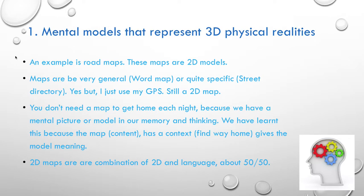Mental models that represent 3D physical realities — an example is a road map. These maps are 2D models; they only have two dimensions, they're flat. Maps can be very general, like a world map, or very specific, like a street directory. Even a GPS is just an automated 2D map with voice cues to tell you when to turn left or right. You don't need a map to get home each night because we have a mental picture in our memory. We've learnt this because the map — the content — has a context. The context is to find your way home, and it gives the model meaning.